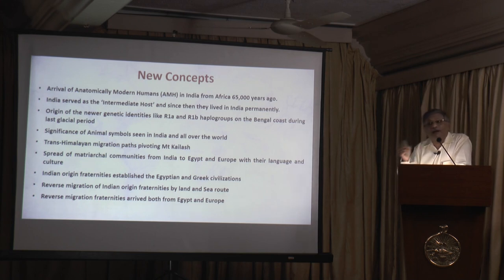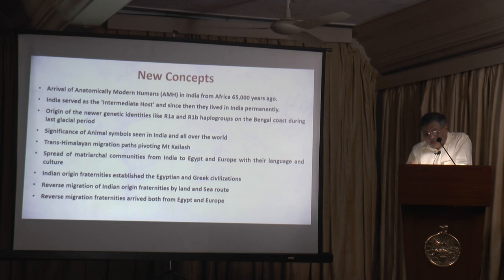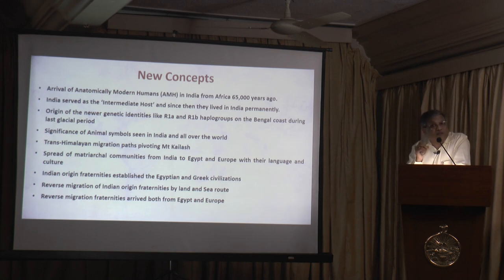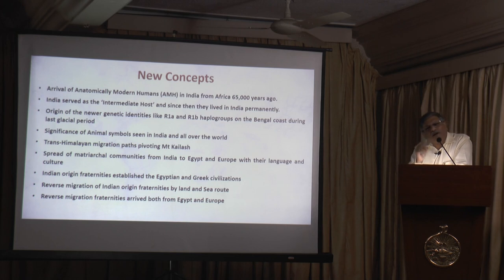One has to understand the process of origin of newer genetic identities like R1-Alpha and R1-Bravo haplogroups on the Bengal coast during the last glacial period. We have to extend our period into glacial and interglacial periods, at least two or three previous glacial periods. It is necessary to understand the significance of animal symbols seen both in India and abroad — a very interesting subject which we tend to ignore. Wherever we go, all over the world, we see some animal symbols.